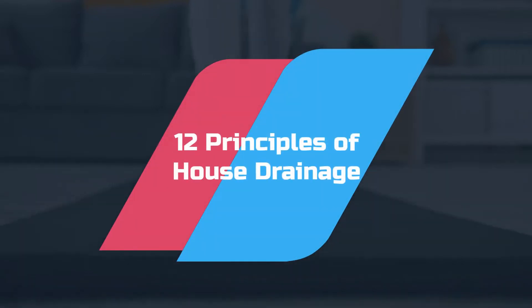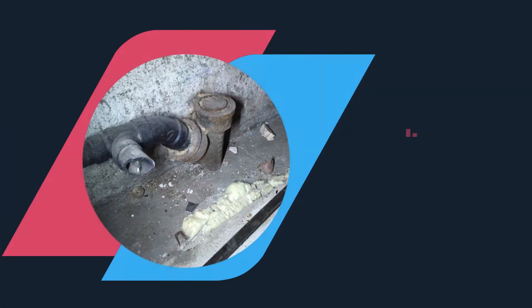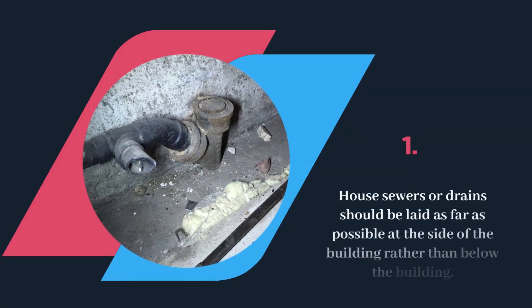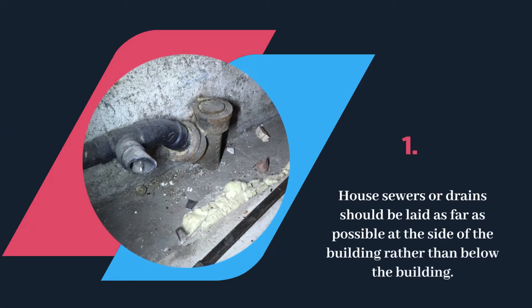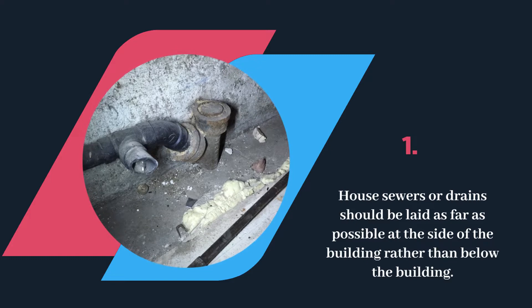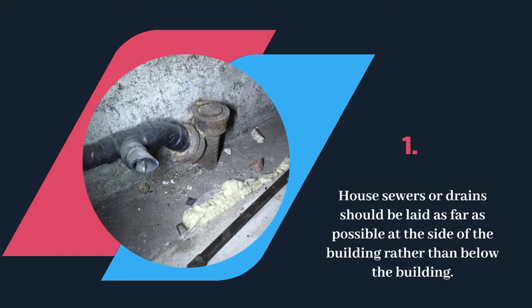12 Principles of House Drainage. House sewers or drains should be laid as far as possible at the side of the building rather than below the building.